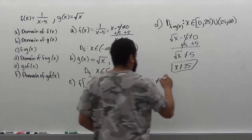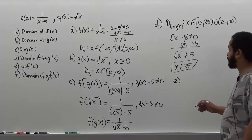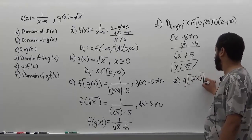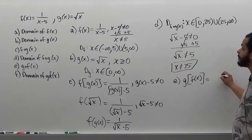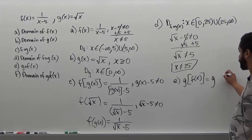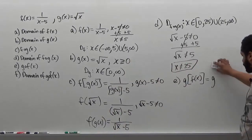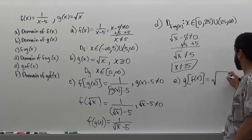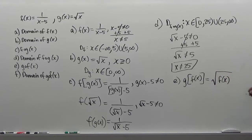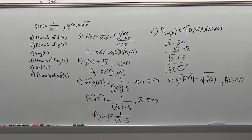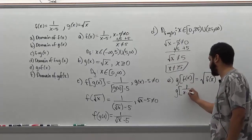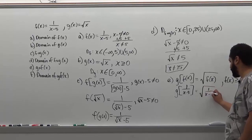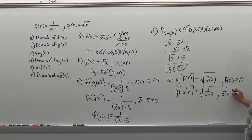Moving on to part e, we're now looking for g of f of x. Instead of inserting g into f, we're going to insert f into g. This gives us g of f of x, which is going to produce the square root of f of x. In this case, we know for this to function, f of x must be greater or equal to 0. The g is taking in an input that is the f of x function, which is 1 over x minus 5. So we get the square root of 1 over x minus 5, where 1 over x minus 5 must be greater or equal to 0.